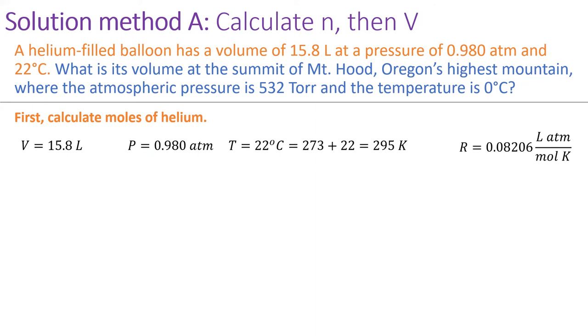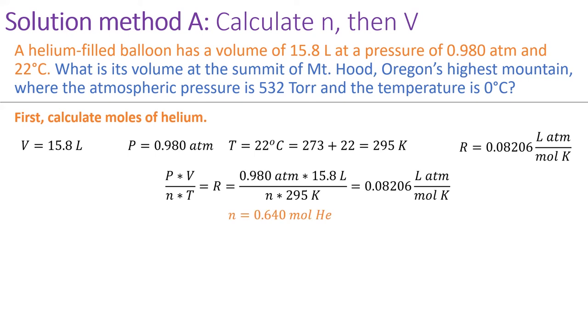Pull the given values from the problem and make sure to convert temperature to Kelvin by adding 273. Also, make sure to use the correct value of R. Check that the units of R match the units for the other values. Then plug these values into the ideal gas equation and solve for n.